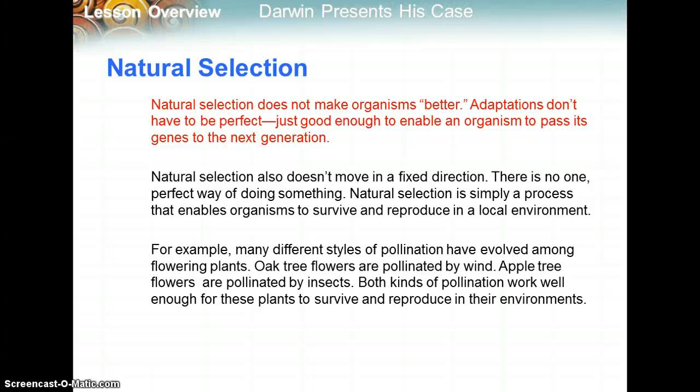Natural selection does not make an organism quote-unquote better. Adaptations don't have to be perfect — they just have to be good enough to enable an organism to pass its genes to the next generation. Anything that allows something to live long enough to reproduce as much as possible is a good adaptation. Natural selection also doesn't move in a fixed direction; there is no one perfect way of doing something. Natural selection is simply a process that enables organisms to survive and reproduce in a local environment.